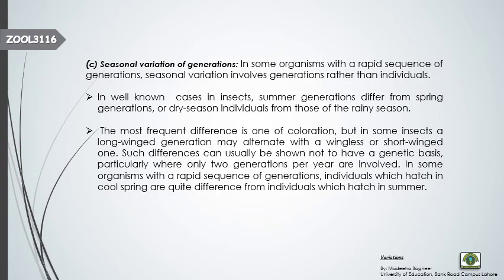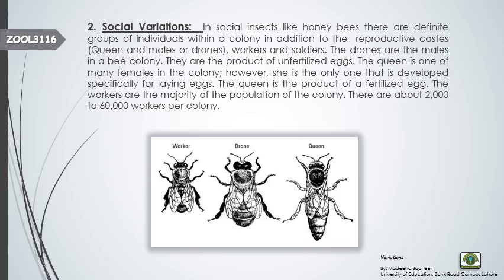We are discussing non-genetic variations within a single population. We have talked about individual variations in time, classified into age variation, seasonal variation of individuals, and seasonal variation of generations. Now comes the second type of non-genetic intra-population variation: social variations.